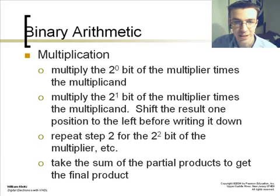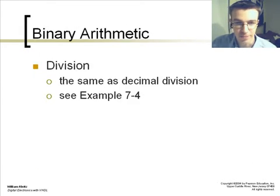Multiplication: you multiply the 2 to the 0 bit of the multiplier times the multiplicand. You multiply the 2 to the 1 bit of the multiplier times the multiplicand. Shift the result one position to the left before writing it down. Then you repeat step 2 for the 2 by 2 bit of the multiplier. You take the sum of the partial products to get the final product.